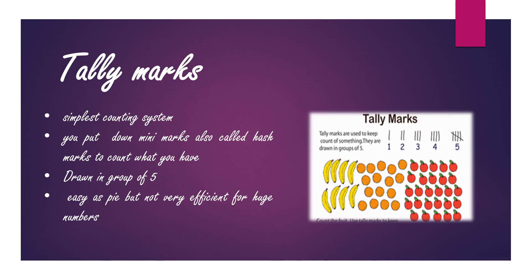Tally marks is the simplest counting system. You put down many marks, also called hash marks, to count what you have, and normally it is drawn in groups of five. These are four small lines and the fifth line is over here, and of course it's easy as pie but not very efficient.